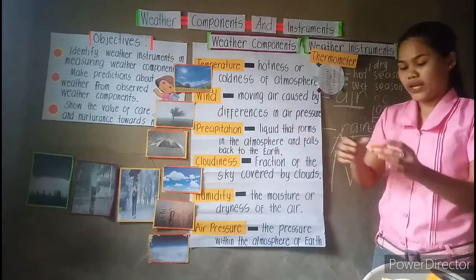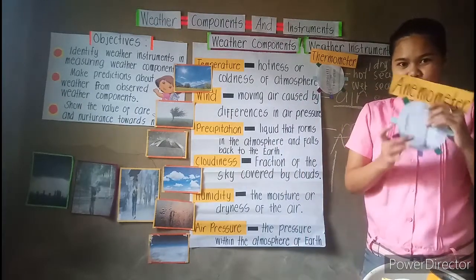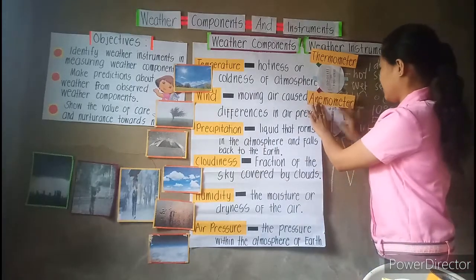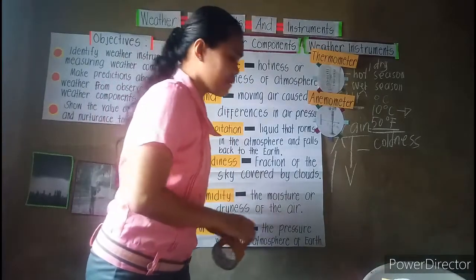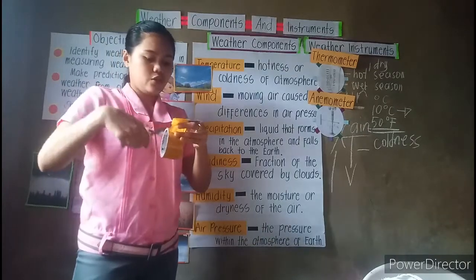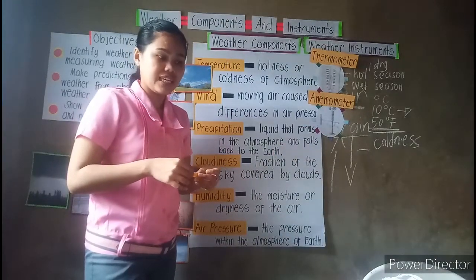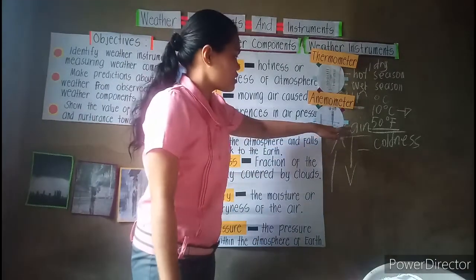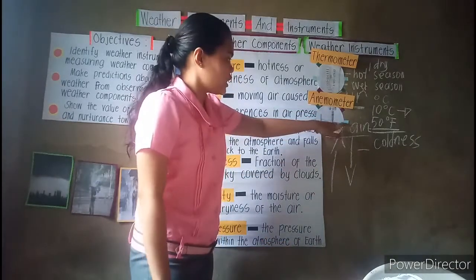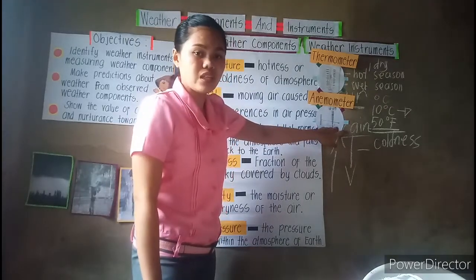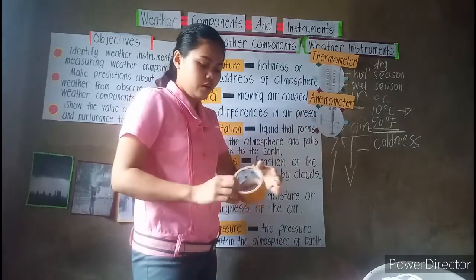Next one class is the wind. We have the instrument used to measure wind, and that's what we call the anemometer. The anemometer is the one that will measure the wind. You see there are directions — North, South, East, and West. This direction will serve as a guide for where the wind is coming from or moving. If it results to west, the wind is from the west.